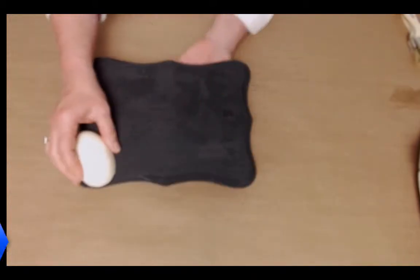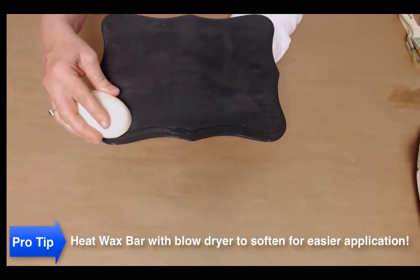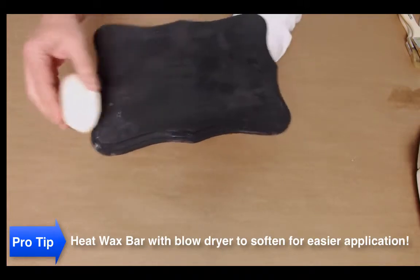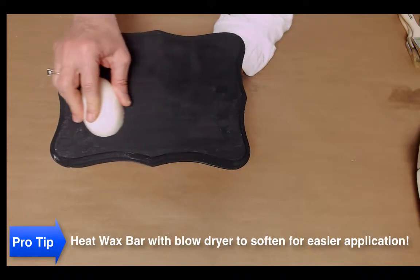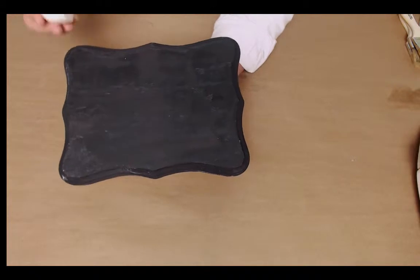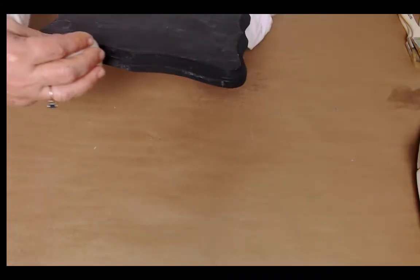So you can either apply around your edges like so, and you can kind of see that the wax build up there. Then you can do all the way across. It's really just going to depend on the look that you're going for, just how much distressing do you want.